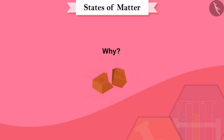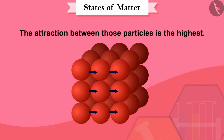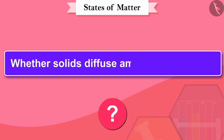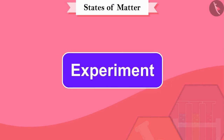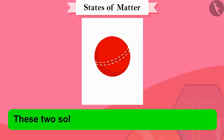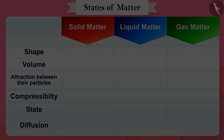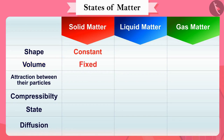Why is this so? This is because there is very little free space between particles in solid matter, and the attraction between those particles is the highest. Can you tell whether solids diffuse among themselves? Let's find this out — take a paper and a ball, and try to mix them. These two solids cannot diffuse into each other. So, the shape and volume of solids are constant, the attraction between particles is highest, compressibility is negligible, and two solids do not diffuse into each other.